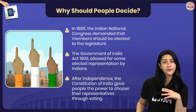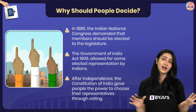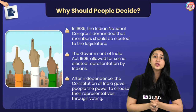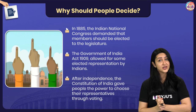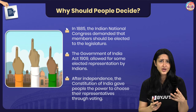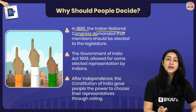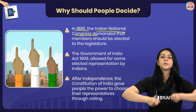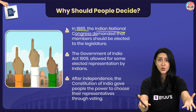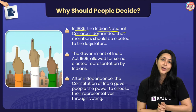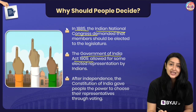Before India got its independence on 15th August 1947, we were under colonial rule. At that point in time, we had no freedom, and the rules were made by the British government. If someone objected to these rules, they faced severe consequences. So in 1885, the Indian National Congress demanded that members of its party should be elected to the legislature, and they also wanted the right to discuss the budget and ask questions.